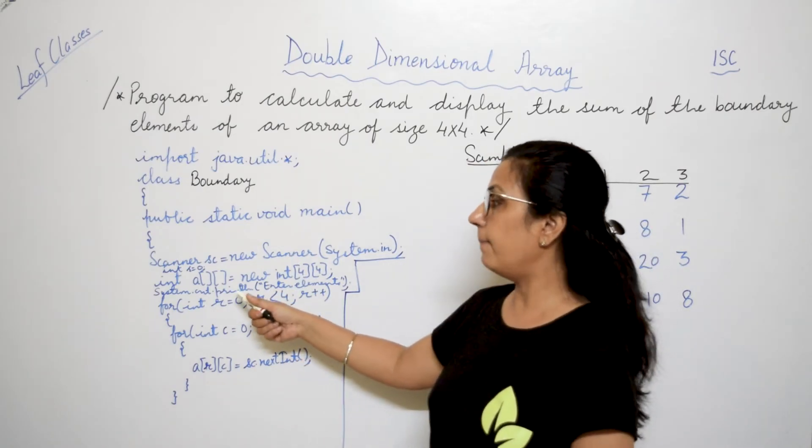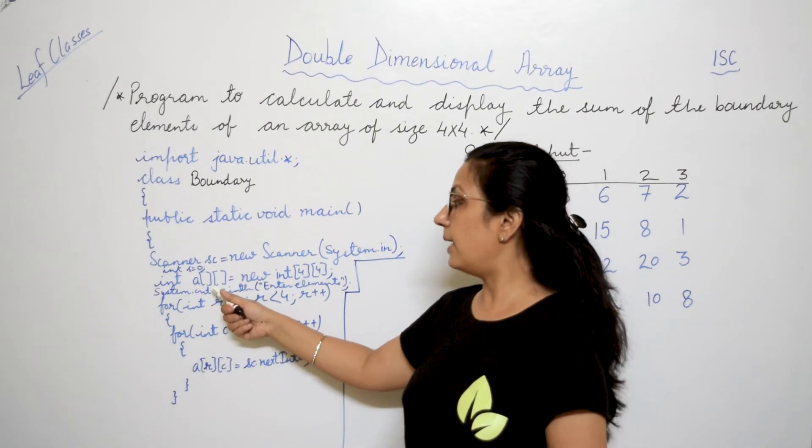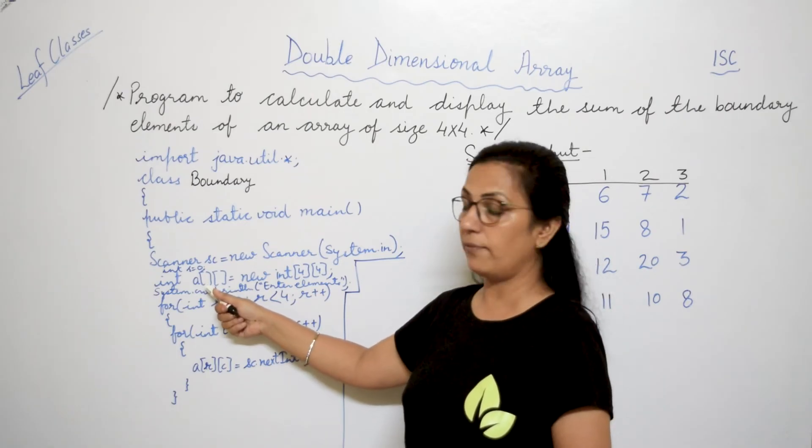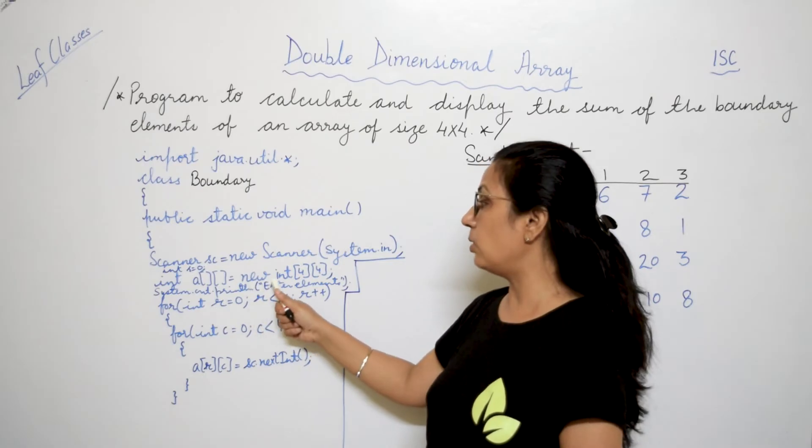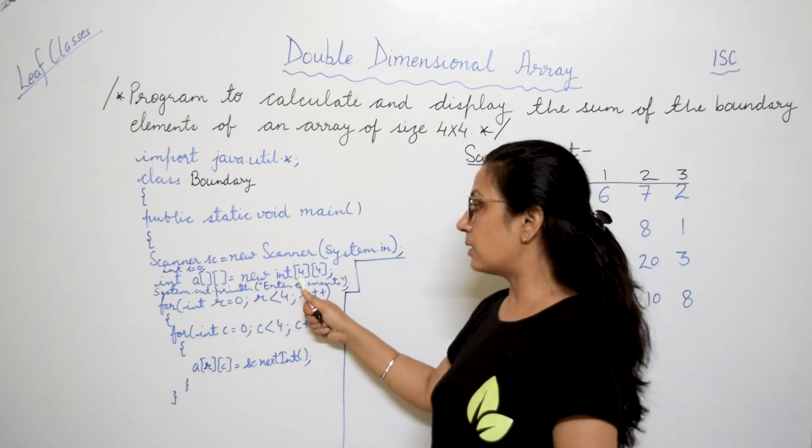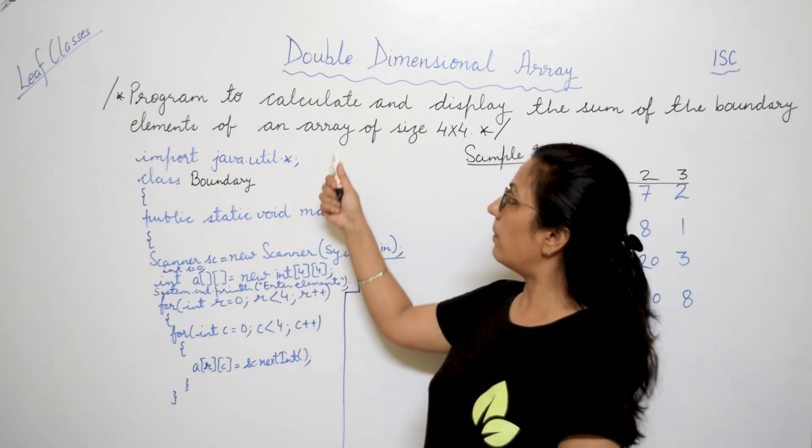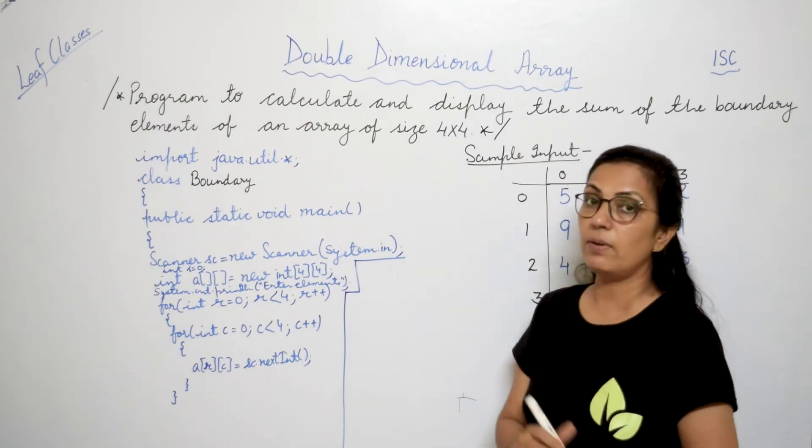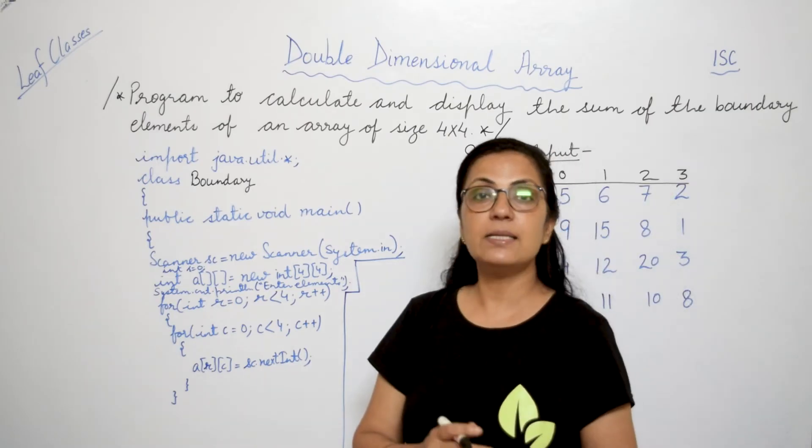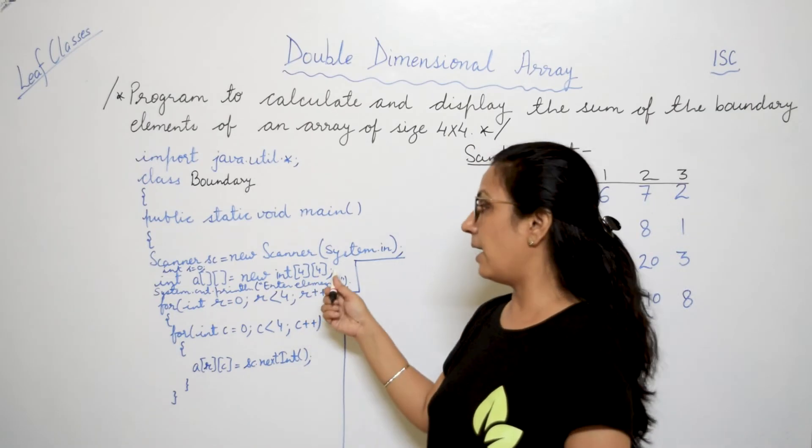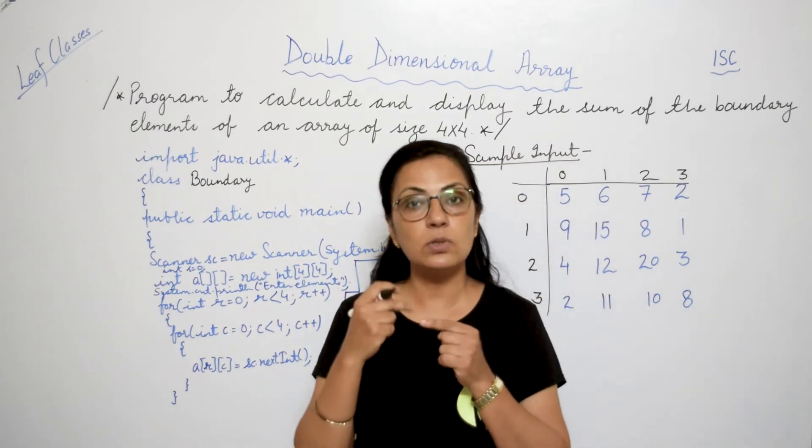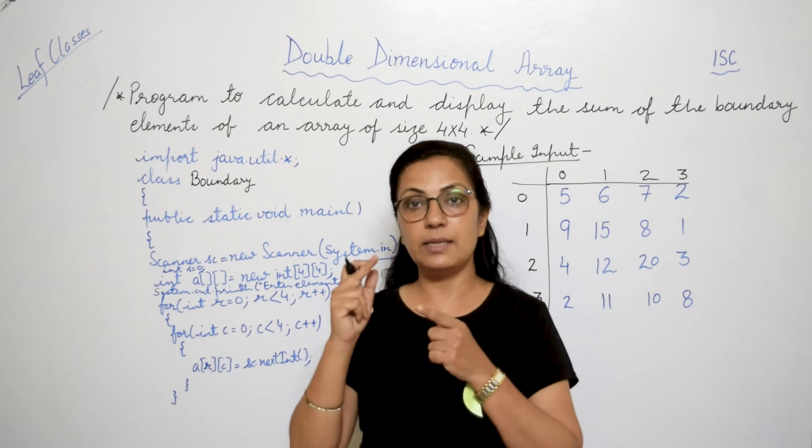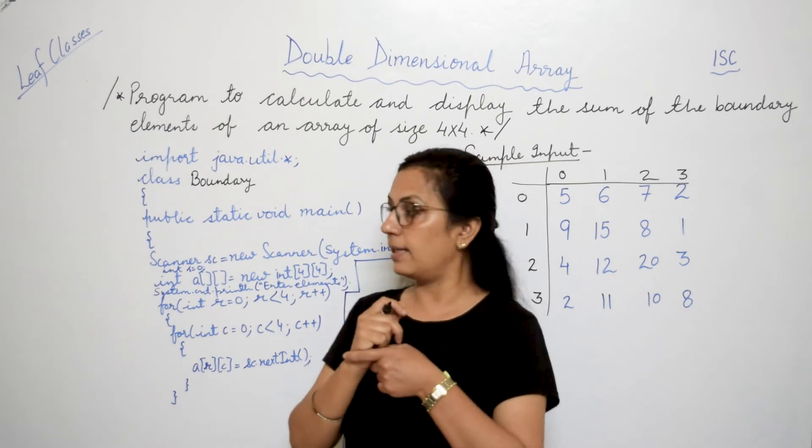Then we have declared the array. Since it is double dimensional array, so 2 subscripts you have to give. Int a and 2 square brackets equals to new int, 4 in first square bracket and 4 in second square bracket because the array size is given 4 by 4. If array size is 3 by 5, then 3 and 5. So always in first subscript, how many rows are there, that comes. And in the second one, how many columns are there.